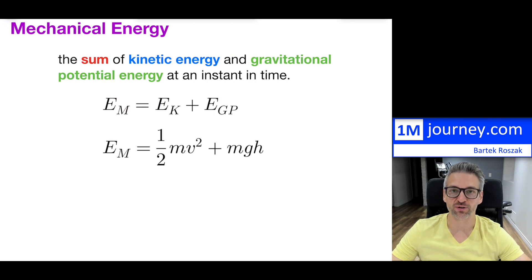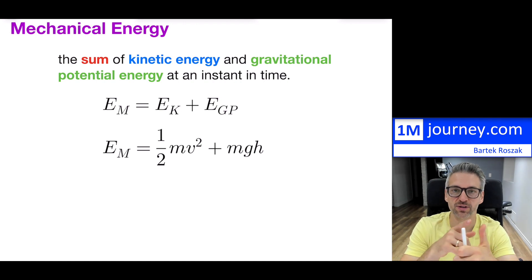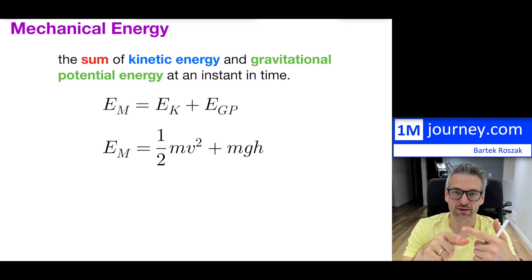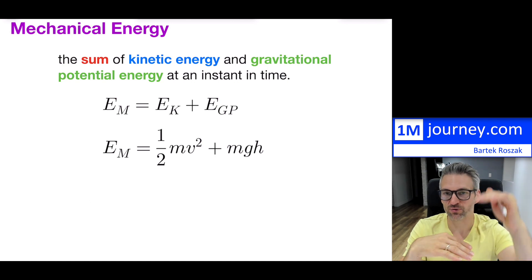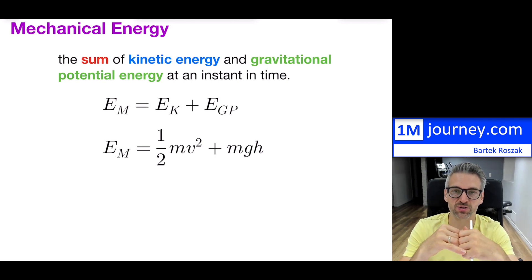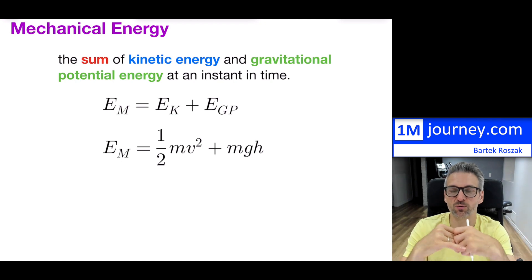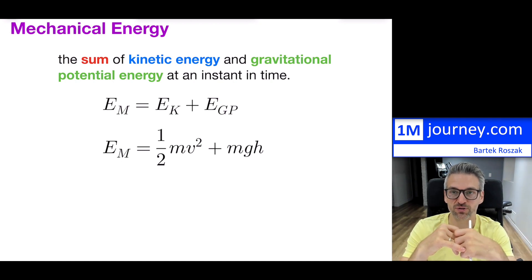So in studying energy as you go through initially in physics, you're going to run into kinetic energy, which is basically the energy due to motion. You're going to have gravitational potential energy, which is the actual energy with respect to a particular height relative to a surface. And you can combine the two — we call the sum of the two energies mechanical energy.